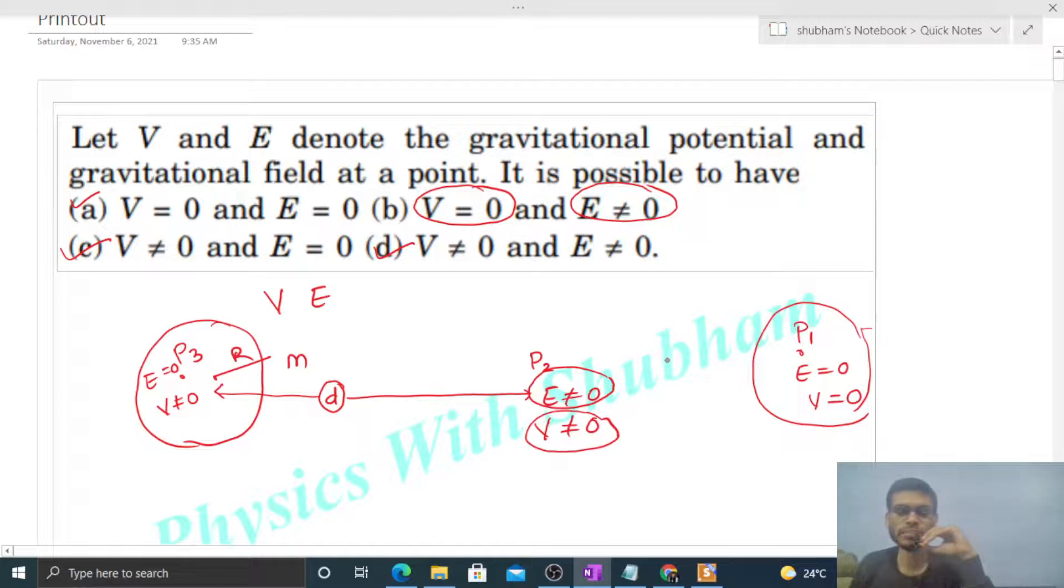We can take the reference at any distance. Let's say at some distance d, at point P2, we take our potential energy reference. Then the potential there will be zero, and the field is not equal to zero. In that sense, we can say option (b) is also correct.